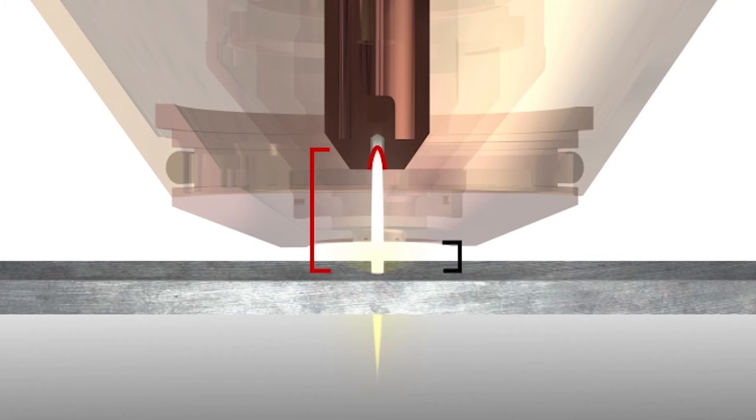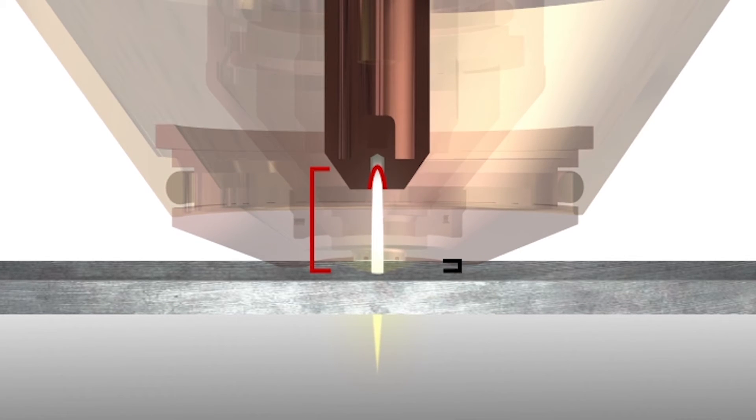As a silver electrode wears, the set arc voltage will cause the torch to move closer to the plate. When this happens, the system is no longer cutting in the optimal part of the plasma arc, and you'll begin to see greater angularity in your cuts.